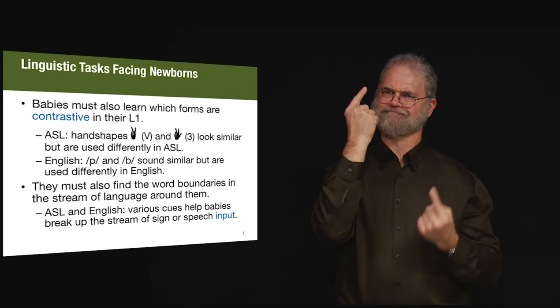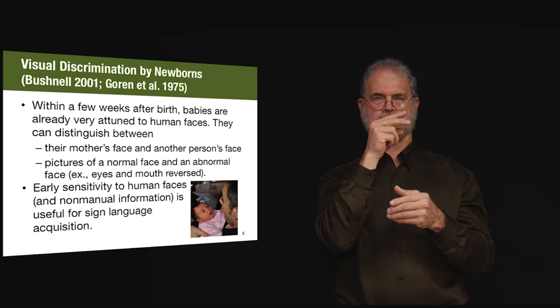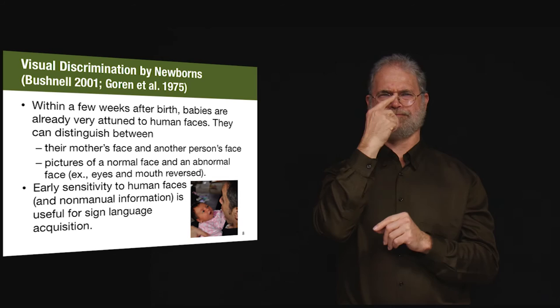At a very young age, babies can discriminate between the faces of different people, such as distinguishing between mother and a different person. Babies can also distinguish between human faces and others that are similar, but not human.